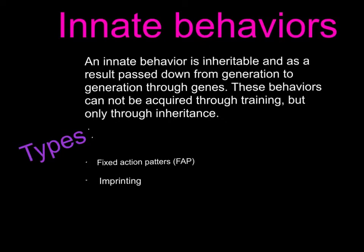Innate behaviors. An innate behavior is inheritable and as a result passed down from generation to generation through genes. These behaviors cannot be acquired through training, but only through inheritance. For example, as us humans, it is innate for us to be hungry — we have no control over that. Blinking is another example. I'm going to talk about two types of innate behavior.